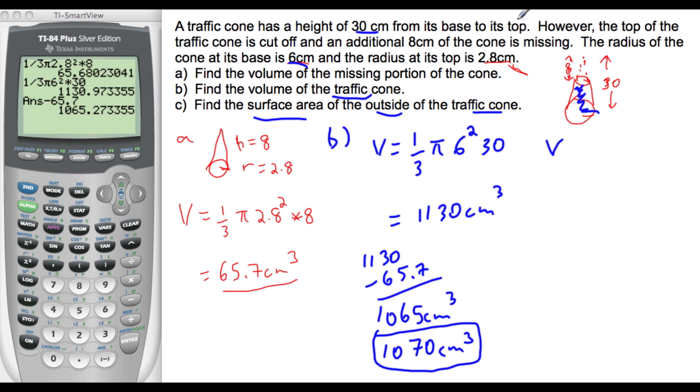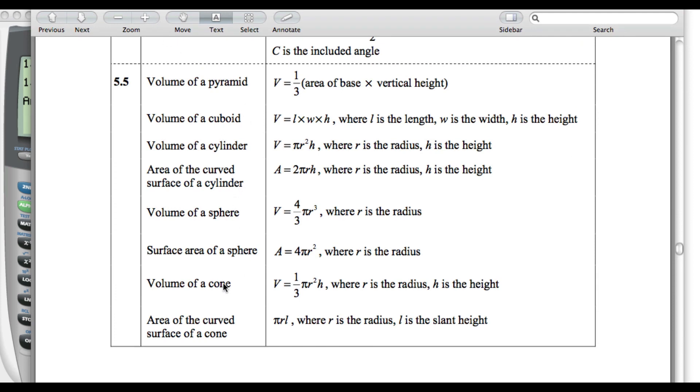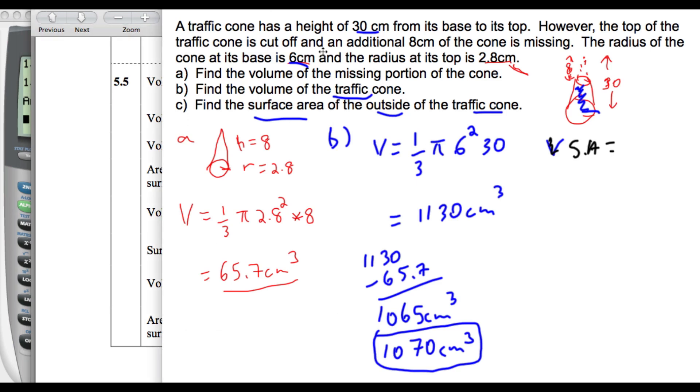So let's start with the top bit, and remember that the surface area equals, from our formula booklet, from the surface area of curved surface of a cone, pi RL, where L is the slant height and R is the radius. So pi RL. The whole cone has a height of 30 and a base radius of 6.